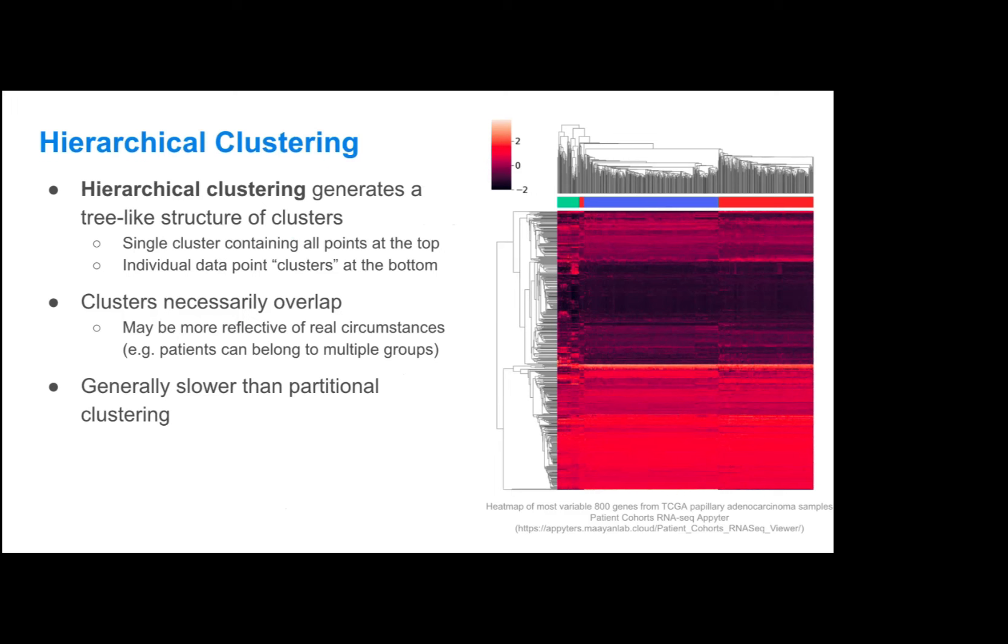Clusters necessarily overlap, because each cluster will belong to a parent cluster and will also probably have some sort of child clusters. This can be more reflective of real circumstances where you do have samples or data points that are going to overlap. For instance, patients might have discrete demographic categories, but they can also belong to multiple groups, perhaps if certain groups of patients are overlapping with each other or are more related to each other than others. But because you're going through the entire data set, hierarchical clustering is slower and more computationally intensive than partitional clustering.